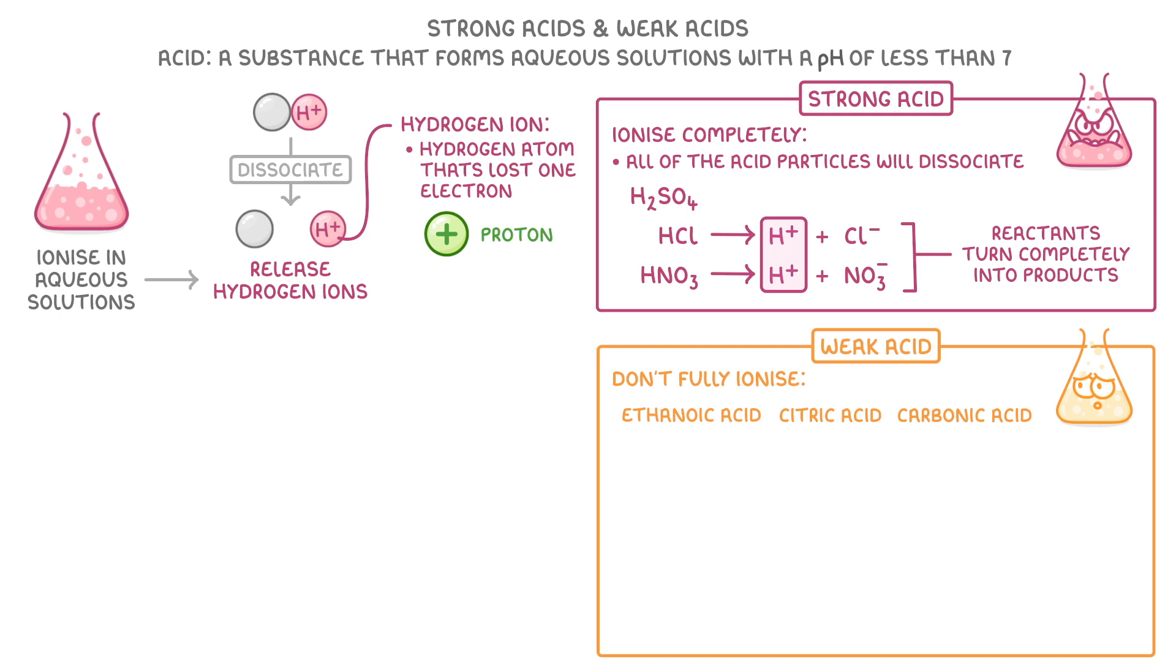This is because the ionisation of a weak acid is reversible, which means that there's an equilibrium between the undissociated and dissociated forms of the acid. We can see this in our equation here for the dissociation of ethanoic acid, because it has a double arrow which shows that the reaction is reversible.